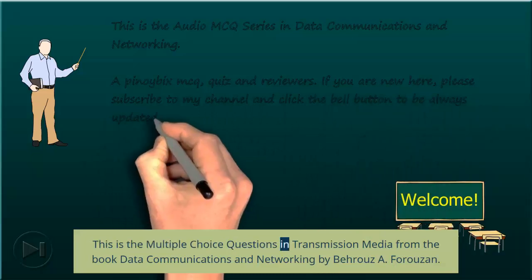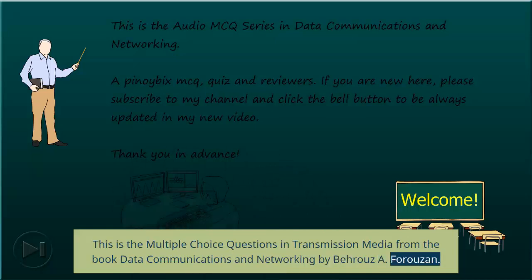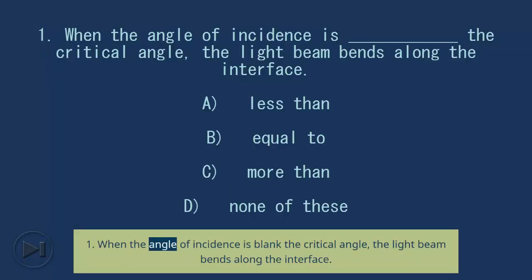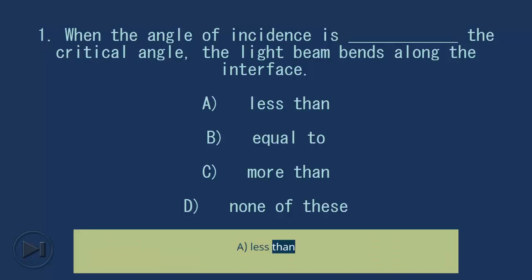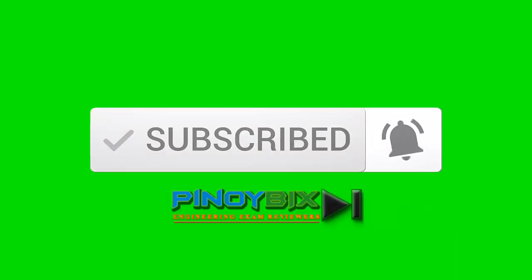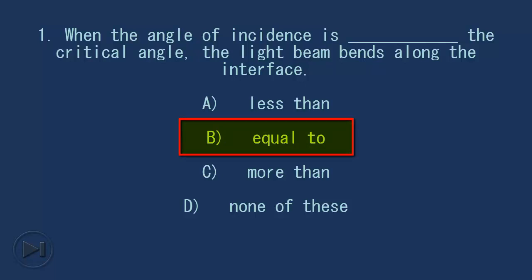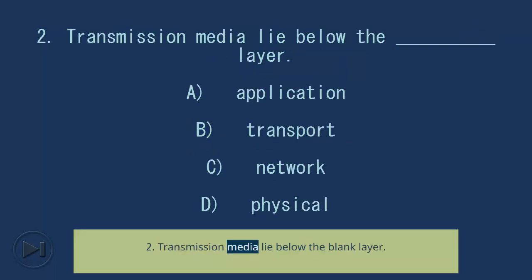This is the multiple choice questions in transmission media from the book Data Communications and Networking by Behrouz Forouzan. Question 1: When the angle of incidence is blank the critical angle, the light beam bends along the interface. A) less than, B) equal to, C) more than, D) none of these. Answer: B, equal to.